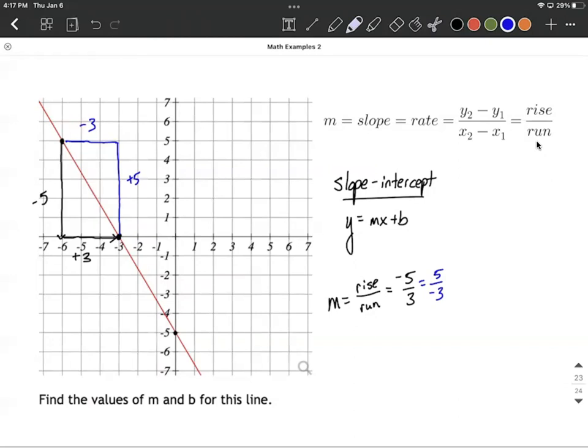All right. Next up, our y-intercept. That's the b component for this. The y-intercept, hopefully we can locate here. It's going to be the point that's on our y-axis. So we could say b is negative 5.